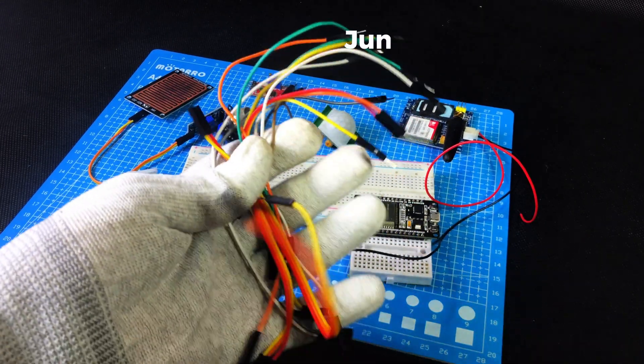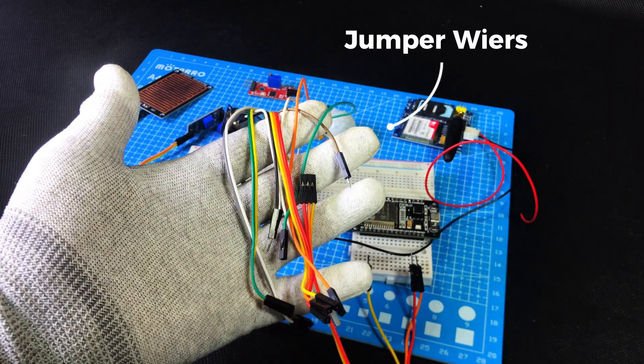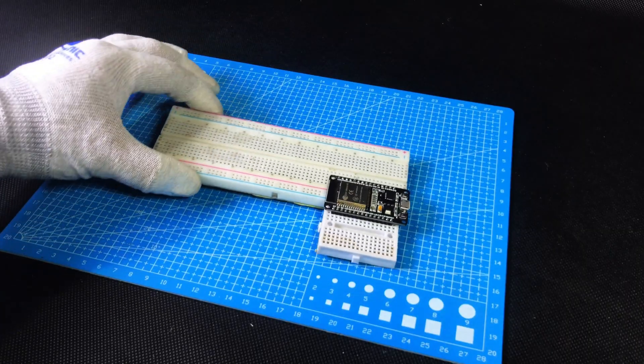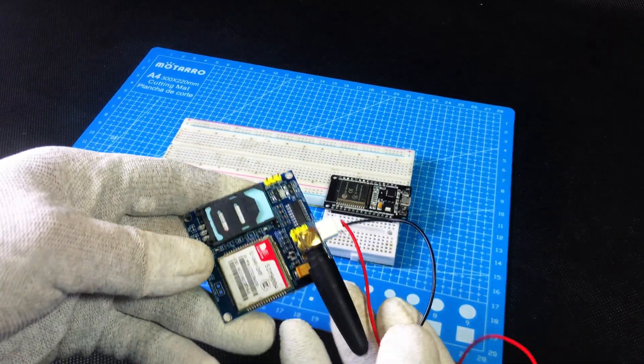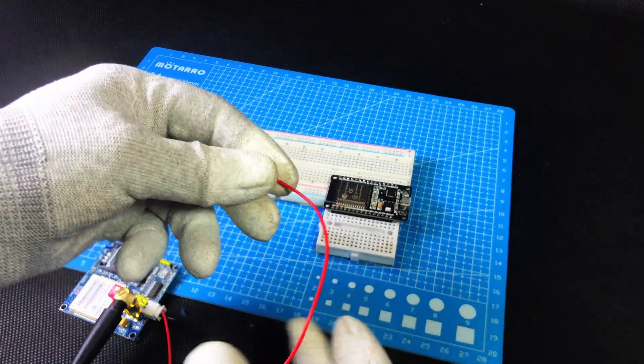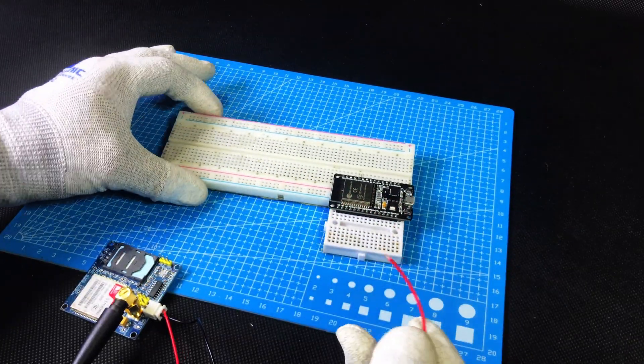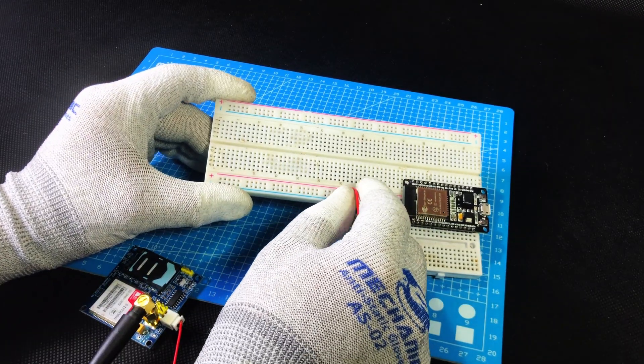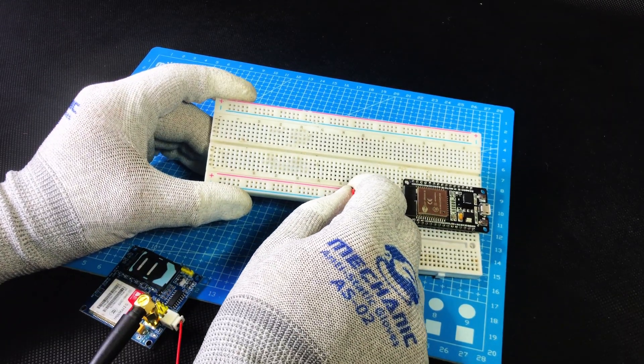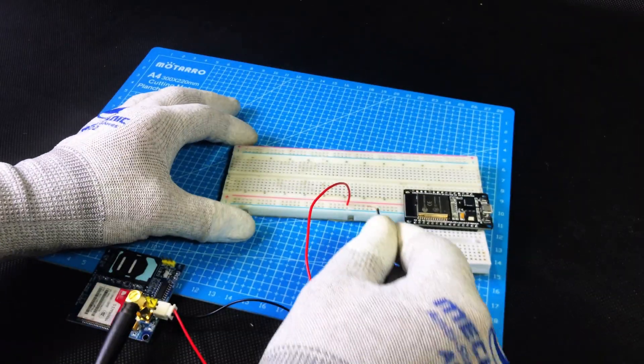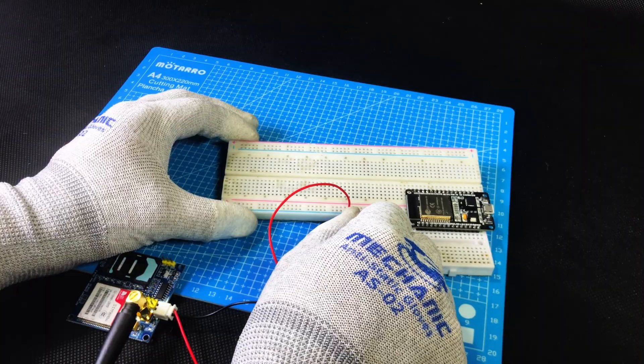And some jumper wires to connect all the components together on the breadboard. Now let's make the connections. First, we will connect the SIM900A GSM module to the ESP32. The SIM900A has two wires, red and black. The red wire is VCC power and the black wire is GND ground. Connect the red wire to the VCC line of the breadboard and connect the black wire to the GND line of the breadboard.